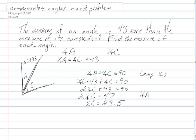To find the measure of angle A, we plug 23.5 in for the measure of C and add 43 to it. So we get 66.5 degrees.